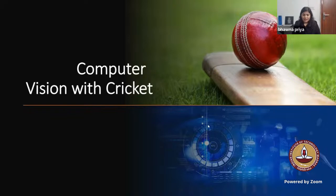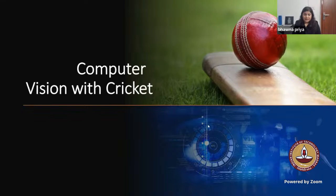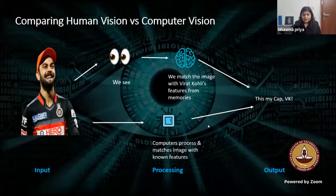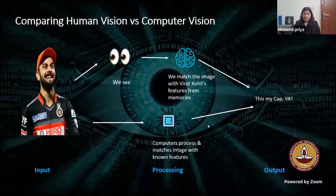What is computer vision? How can we apply computer vision with cricket, and how does computer vision play a role in sports analytics? Computer vision is that field of AI with which you can leverage the machine's capabilities to analyze image data and video data.